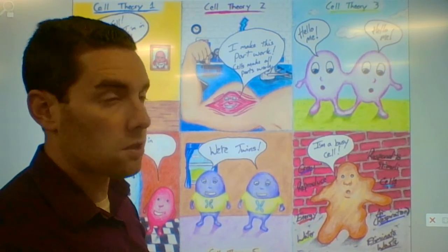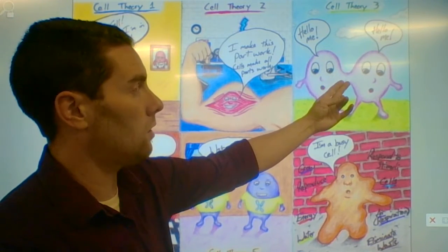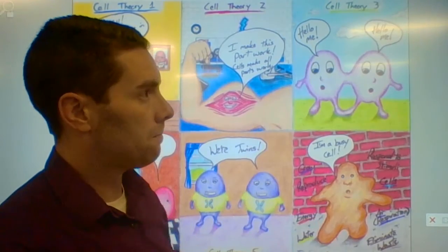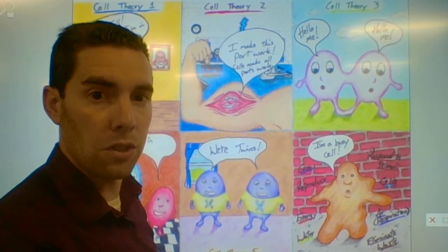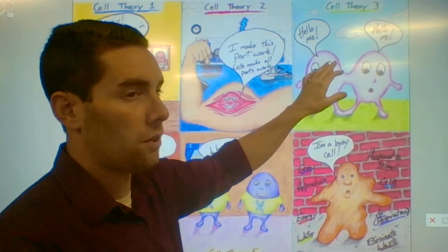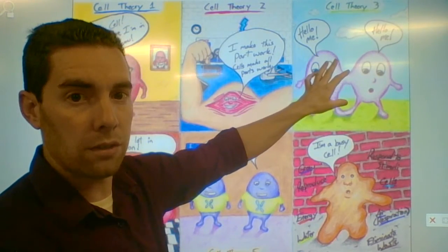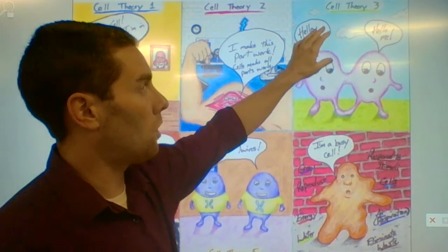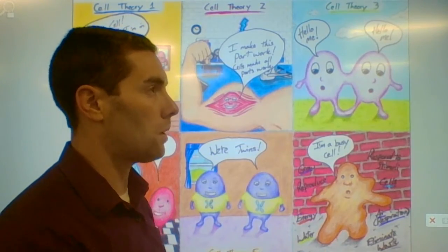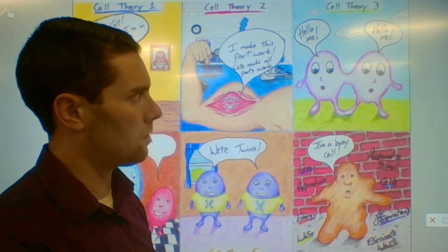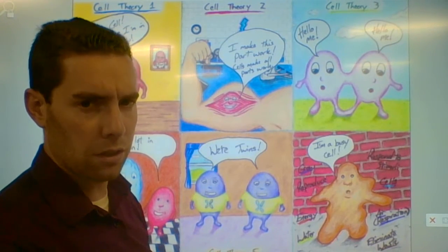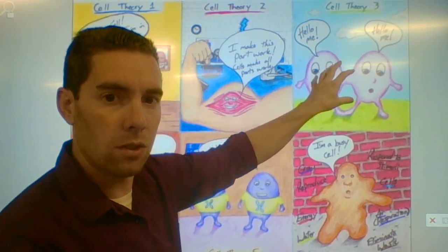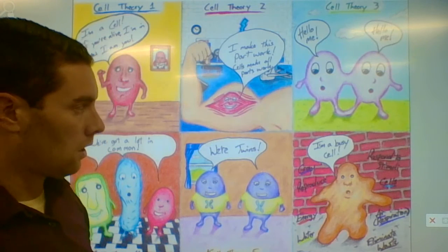Cell theory number three is that all cells come from pre-existing cells. Here I have two cells from mitosis — asexual reproduction — and both say 'hello me,' because they're identical to each other, showing they came from each other. I don't need to show the full picture of mitosis, but you could. They were one cell and now they're turning into two, just like our picture for mitosis.